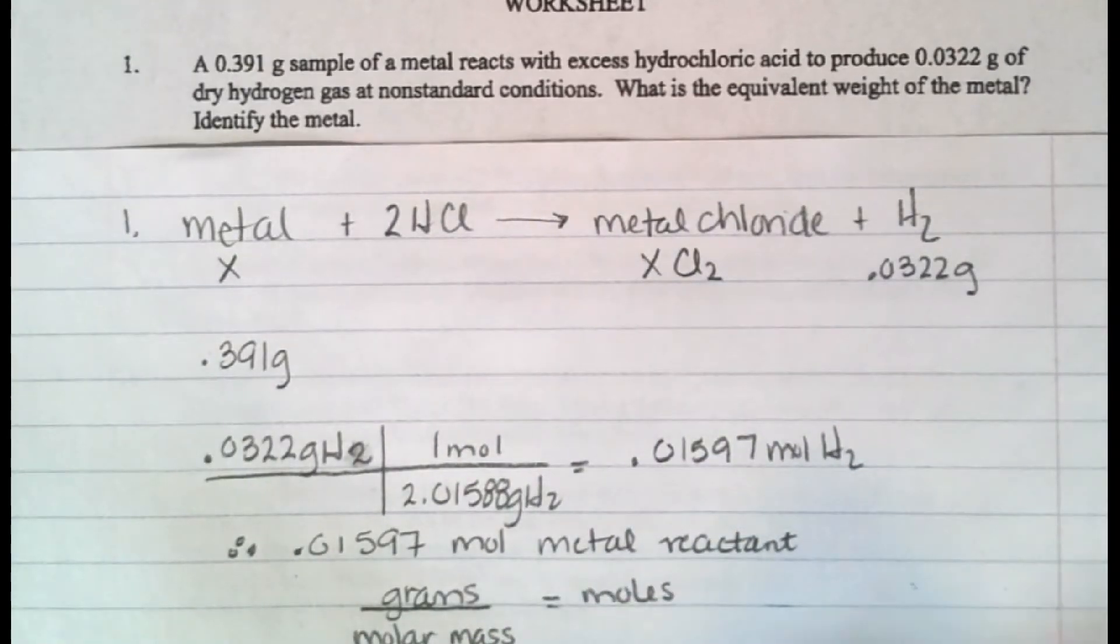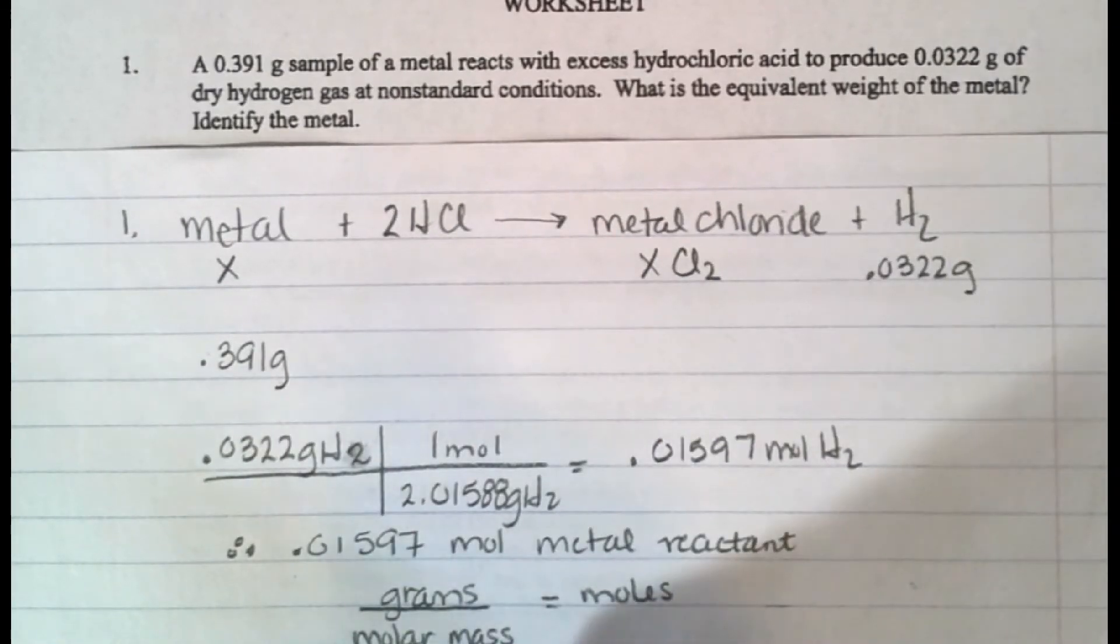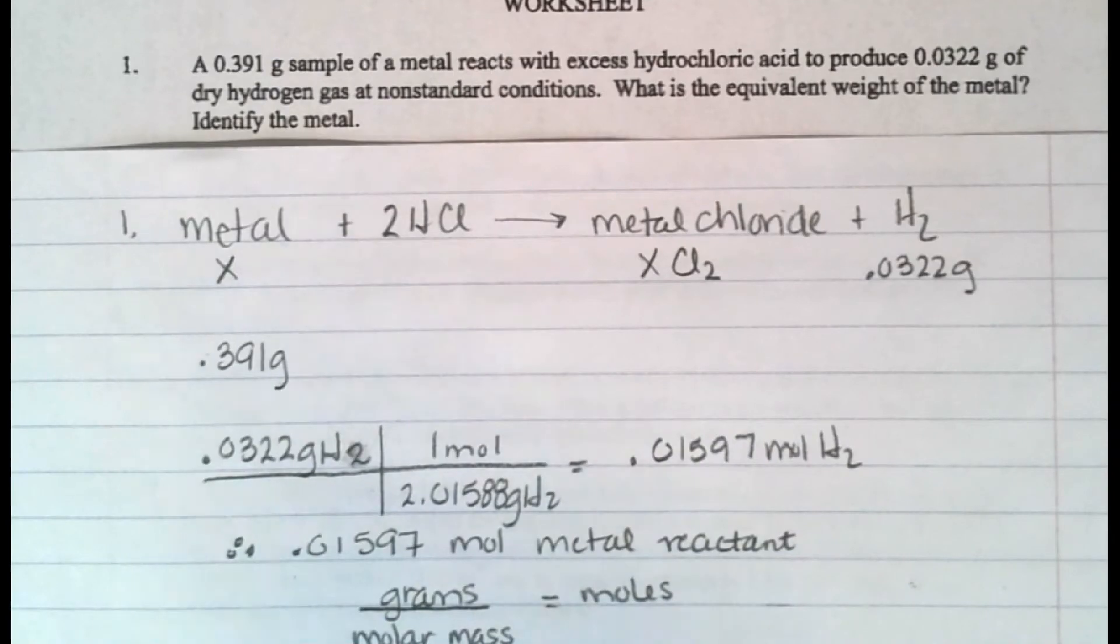So let's look at that concept for a little bit. If I know the grams, and I do know the grams, it's 0.391. I do not know the molar mass, so we'll use that as x. And I do know the number of moles, 0.01597.